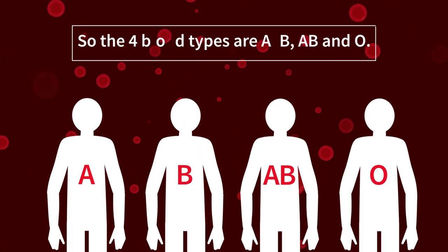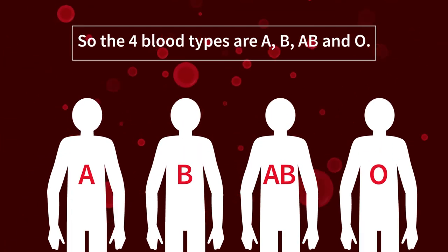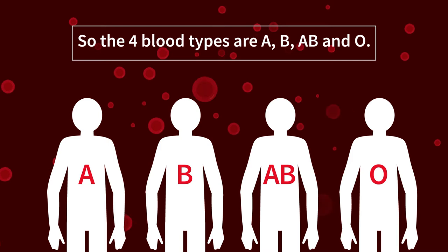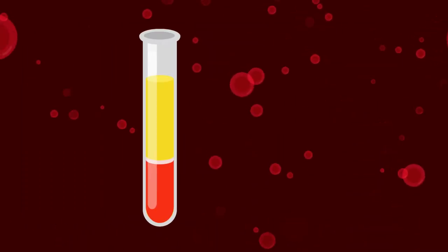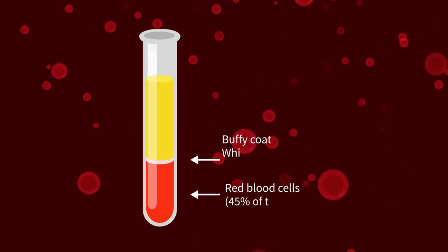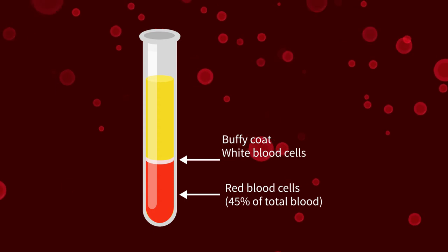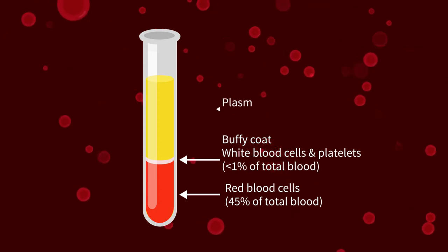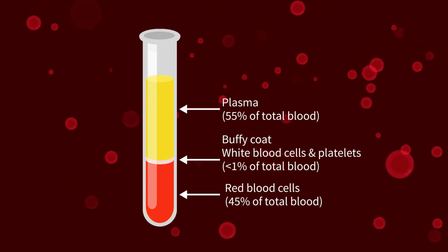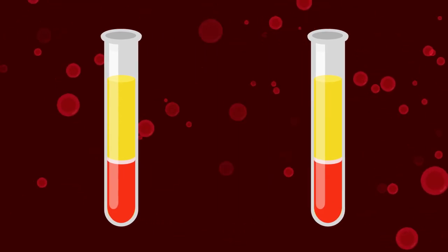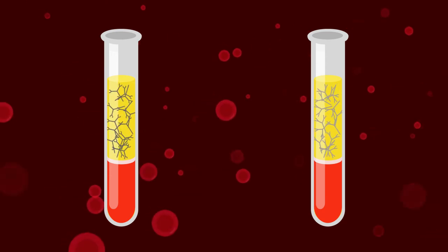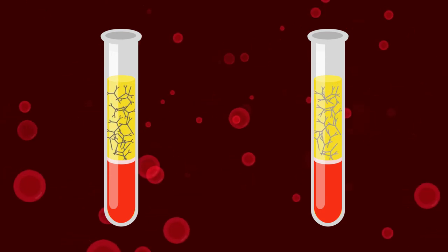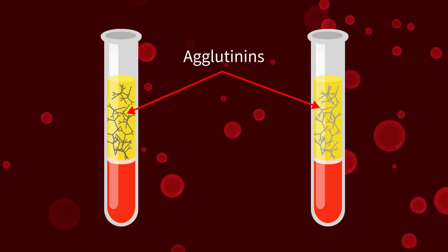So the four blood types are A, B, AB, and O. Blood is made up of blood cells — red and white — platelets, and a liquid called plasma. The plasma contains many types of molecules, including antibodies, which are also called agglutinins.